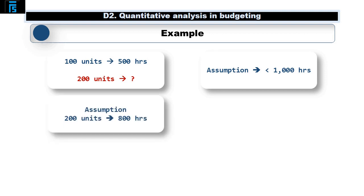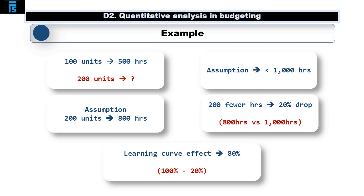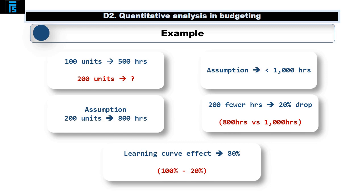Let's assume it takes a total of 800 hours to make the 200 units. This tells us that the learning effect has resulted in it taking 200 fewer hours to make all 200 units. This is a drop of 20% compared to the 1000 hours it would have taken based on the original 500 hours for the first batch of 100 units. We would therefore state that the learning curve effect is 80%, that being 100% minus the 20% decrease in time taken.